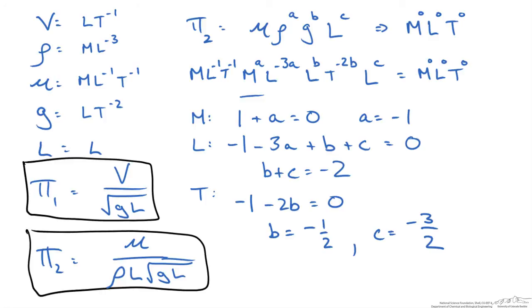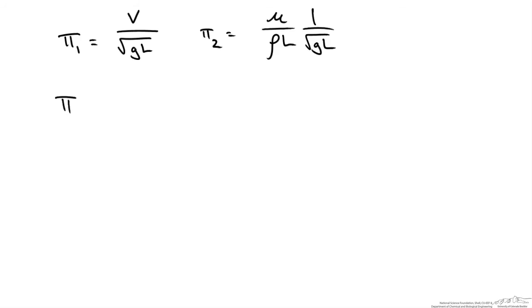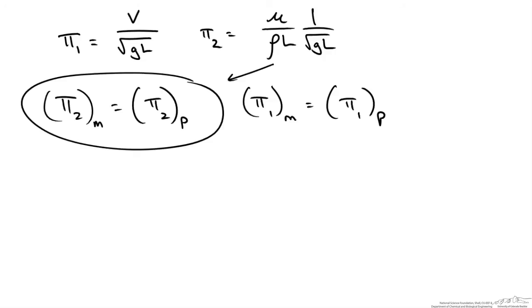We have two dimensionless groups what do we do now? So similitude means that if we have our second pi group of our model equal to the second pi group of our prototype then that means our first pi group of our model must also be equal to our first pi group of our prototype. So if we could set one dimensionless parameter like the second pi group to be equal in both cases the model and the prototype then we could predict what our prototype pi 1 term should be because we can measure the pi 1 term in our model.